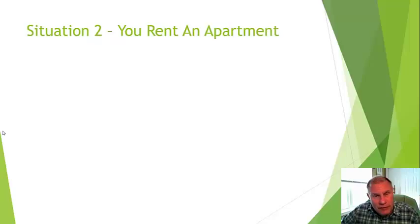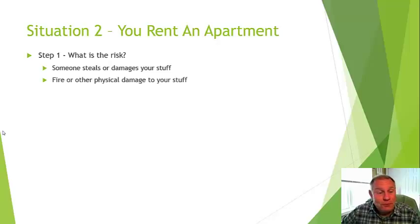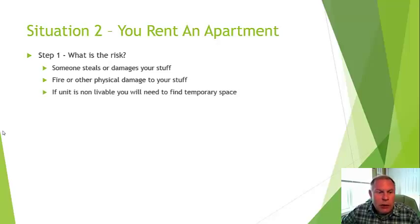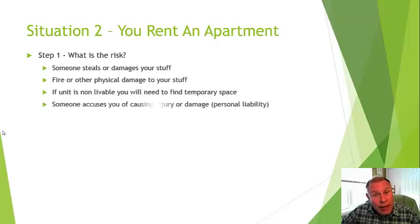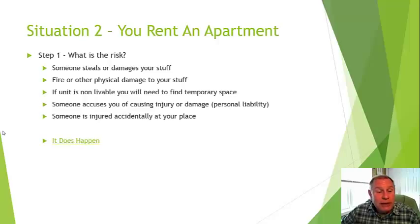The next situation is: you rent an apartment. What's the risk? Someone steals or damages your stuff. Fire or other physical damage — water damage, fire damage, smoke damage. What if the place you live in is destroyed and you have no place to live? You'll need to find temporary space. Someone could also accuse you of causing injury or damage in your apartment — that's the personal liability aspect, similar to what we saw in auto insurance.